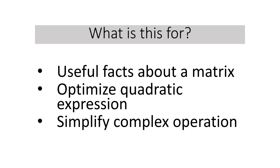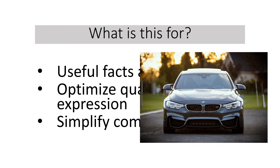What is the significance of understanding eigendecomposition? First, it tells us many useful facts about a matrix — for example, a matrix is singular if and only if any of the eigenvalues are zero. Second, it can be used to optimize quadratic expressions, and in short, it simplifies the calculation of other complex operations. The best way to understand its significance is by imagining you are examining a car that is not working: you disintegrate the parts and understand the core components and their tasks.